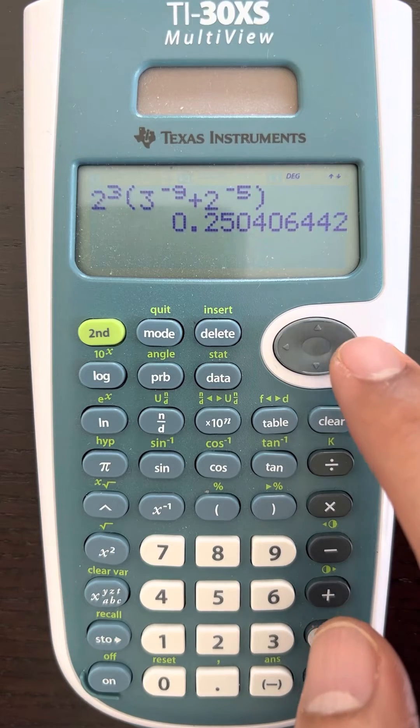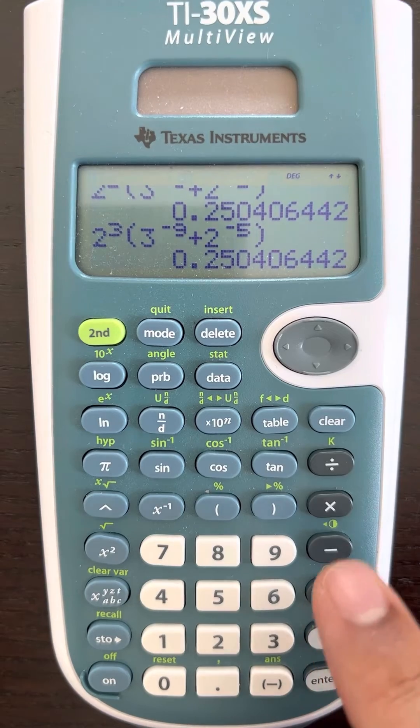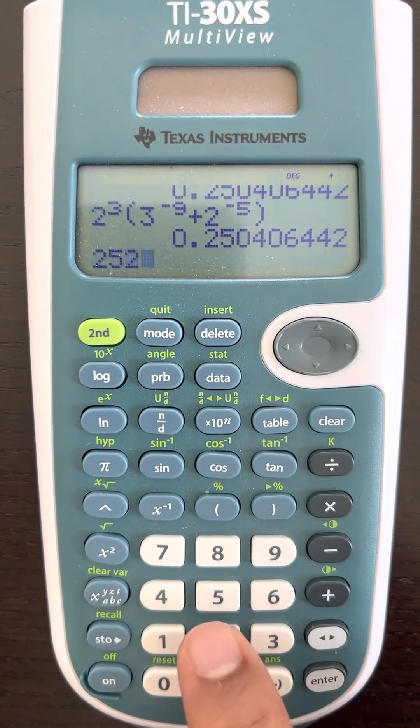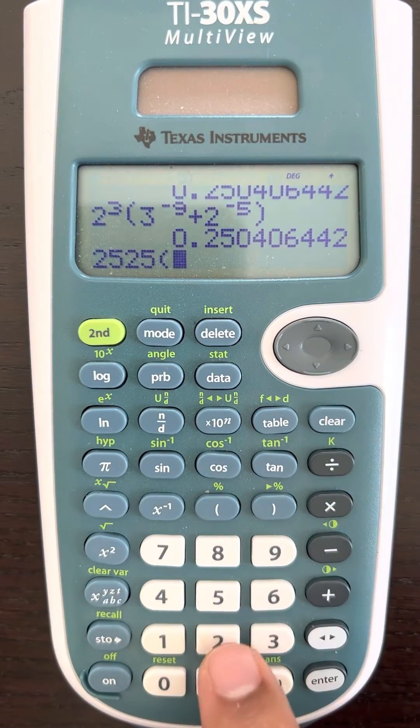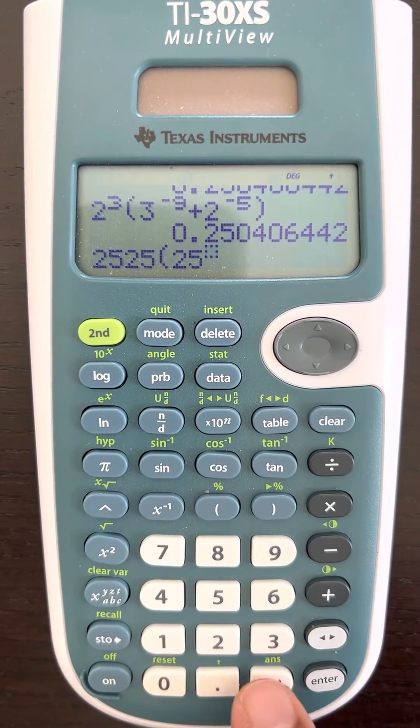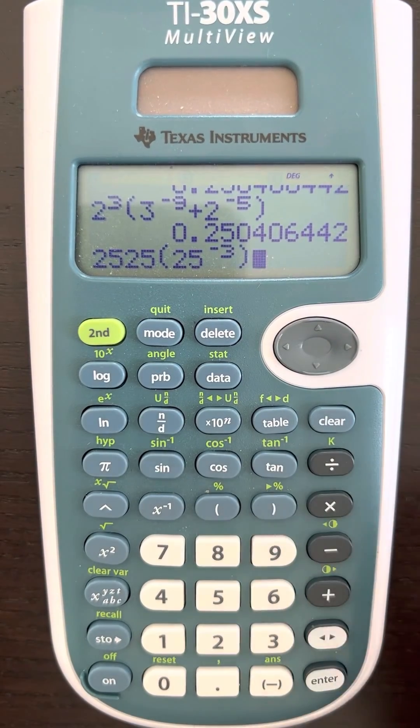So in order to bring the cursor down when you're doing something like this with any number and parenthesis, press on this side and the cursor will come down.